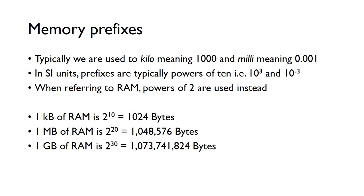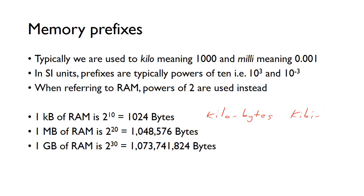Similarly, 1 megabyte of RAM is 2 to the 20, which gives us just over the 1 million we'd expect from powers of 10 SI units. And 1 gigabyte is 2 to the 30, which gives us just over 1 billion. So when referring to RAM, remember to use powers of 2. You might see these written as kibibytes rather than kilobytes.